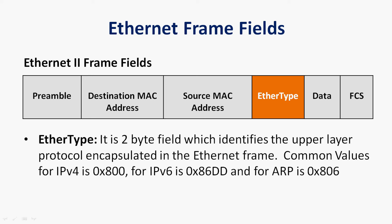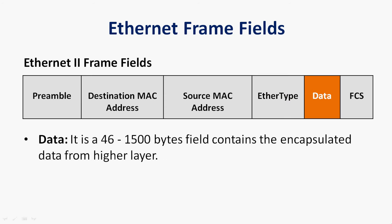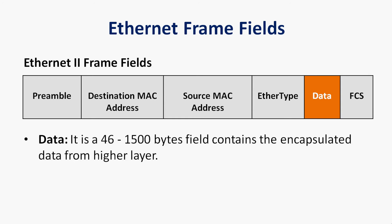For ARP (Address Resolution Protocol) the EtherType value is 0x0806. We will see all these EtherType common values using Cisco Packet Tracer. The data field is 46 to 1500 bytes and contains the encapsulated data from the higher layer.